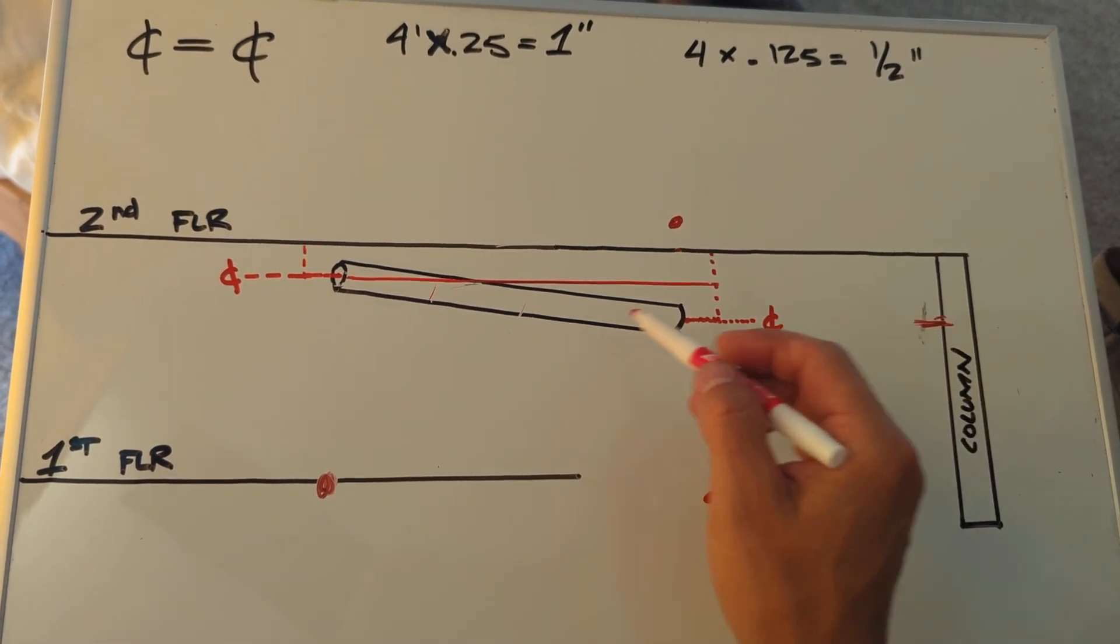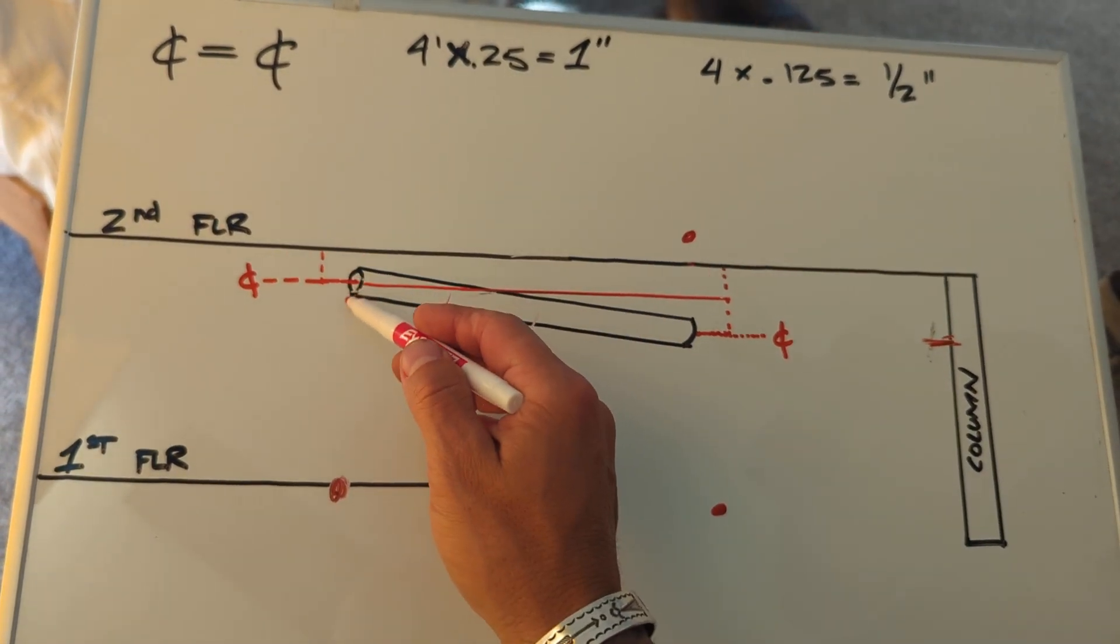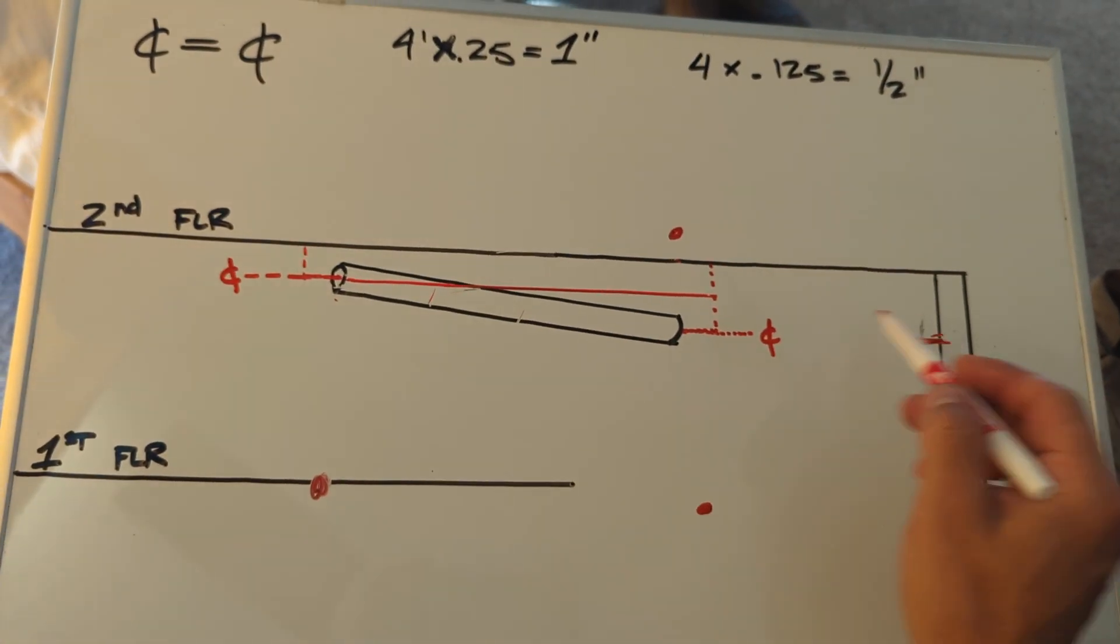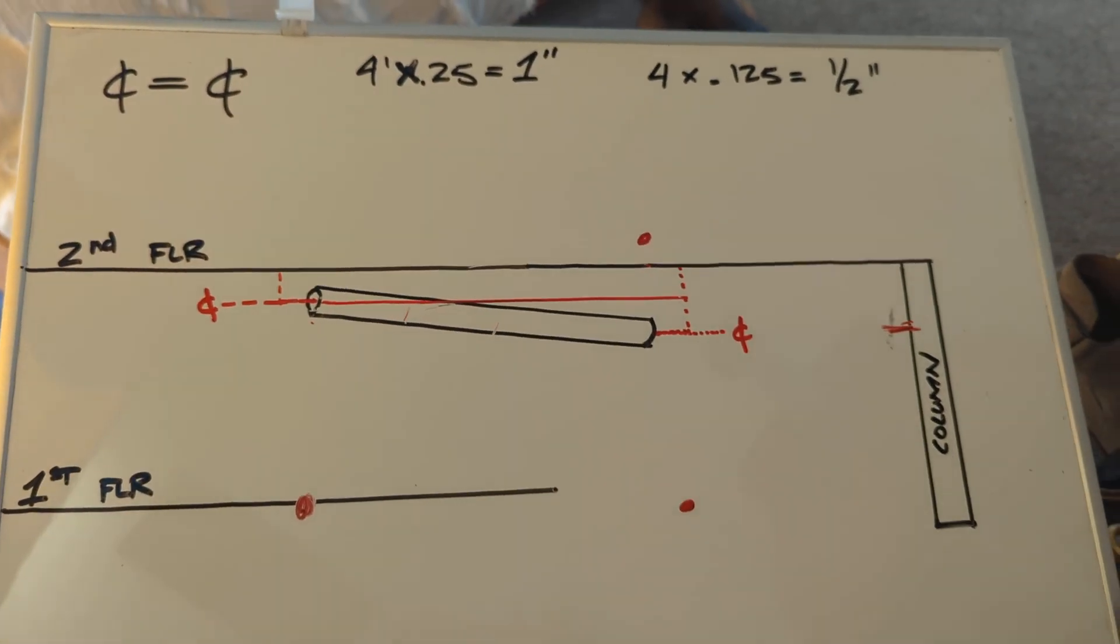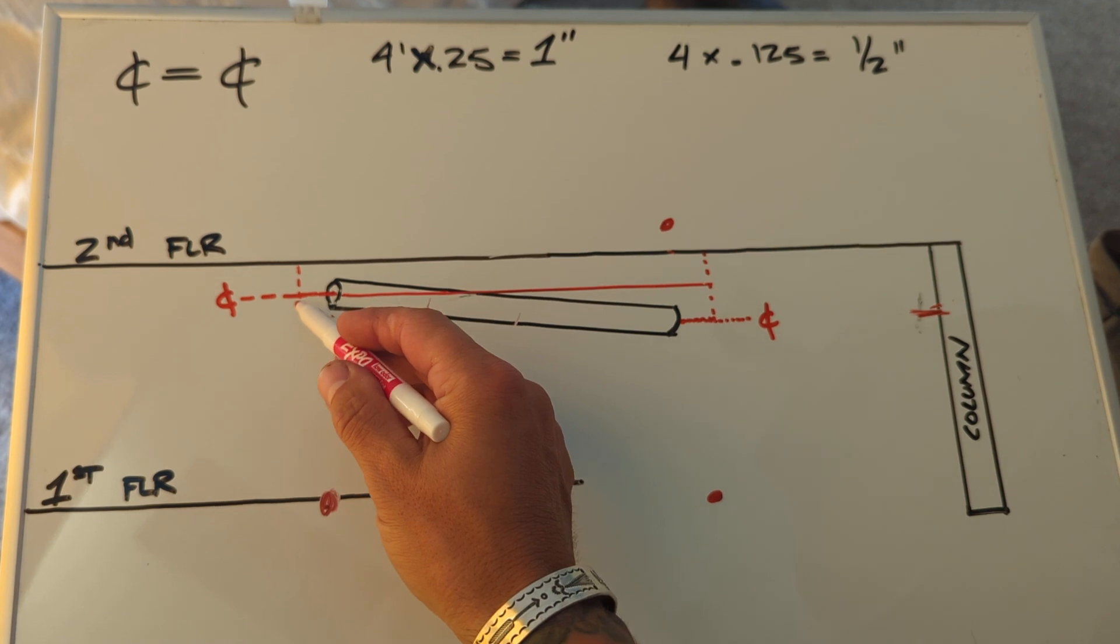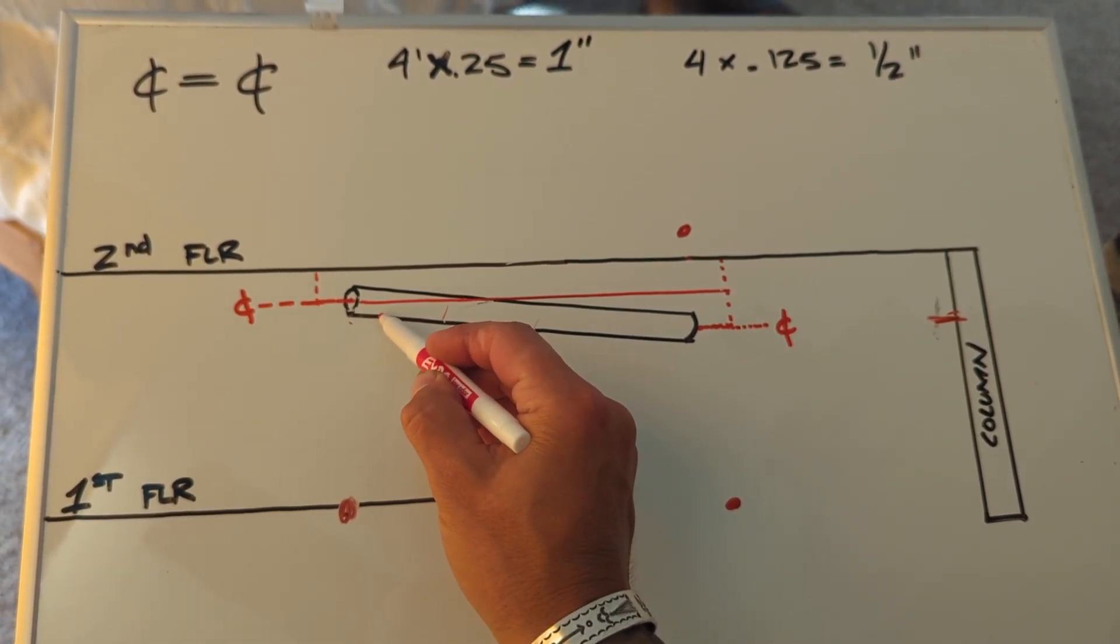So that way you can measure, let's say your bottom of pipe needs to start at 9 foot, you set that laser at 9 foot. And then once you set your first hanger, a lot of the times what we do is a story pull. So once you start setting the hangers, you set one hanger here.